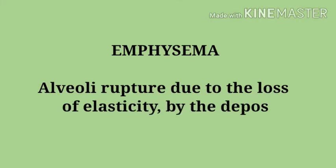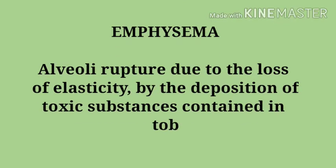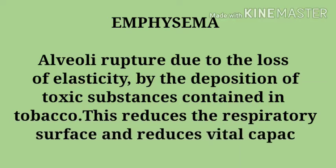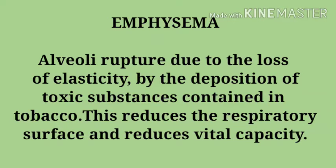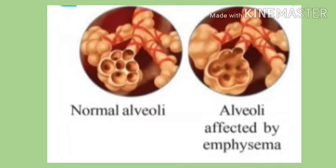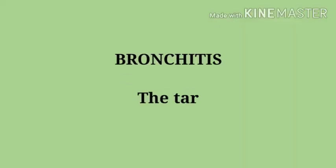Toxic substances like nicotine, tar, toluene, methanol, stearic acid, etc., contained in tobacco get deposited in the alveoli, which in turn lose their elasticity. When the alveoli lose elasticity, they rupture, reducing the respiratory surface and thereby reducing the vital capacity as well.